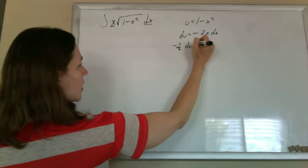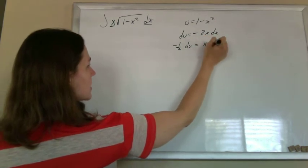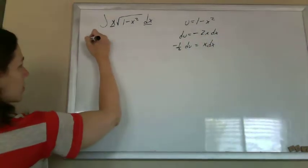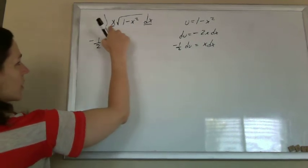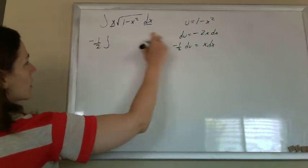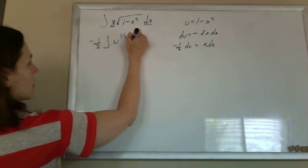I'm just going to keep that over. Negative one half du is x dx. So I can write the whole integral in terms of u. Take out the negative one half. The x dx is covered. This is u to the one half du.